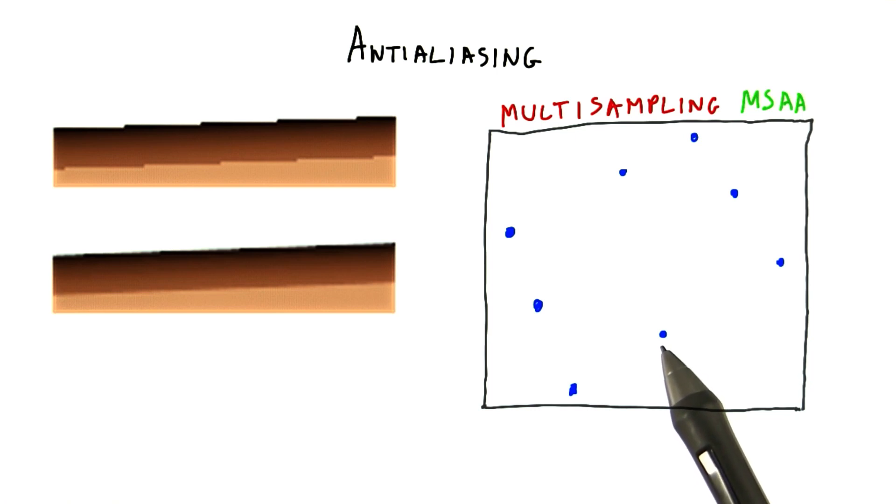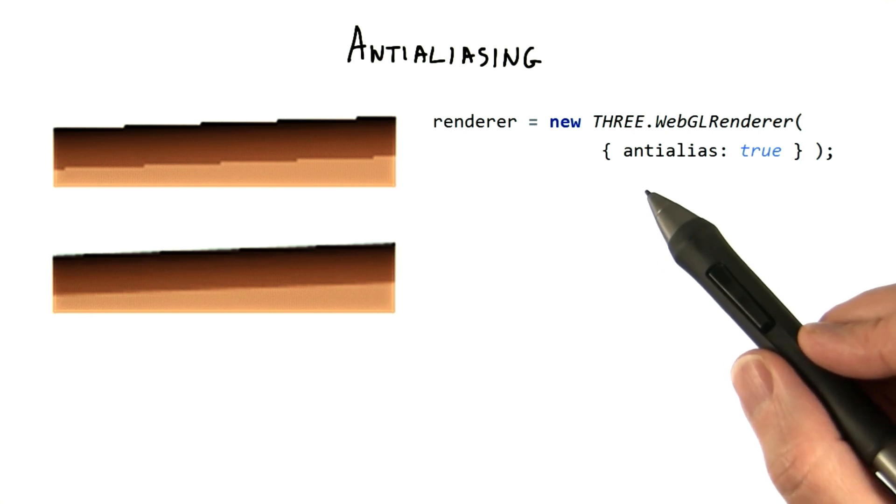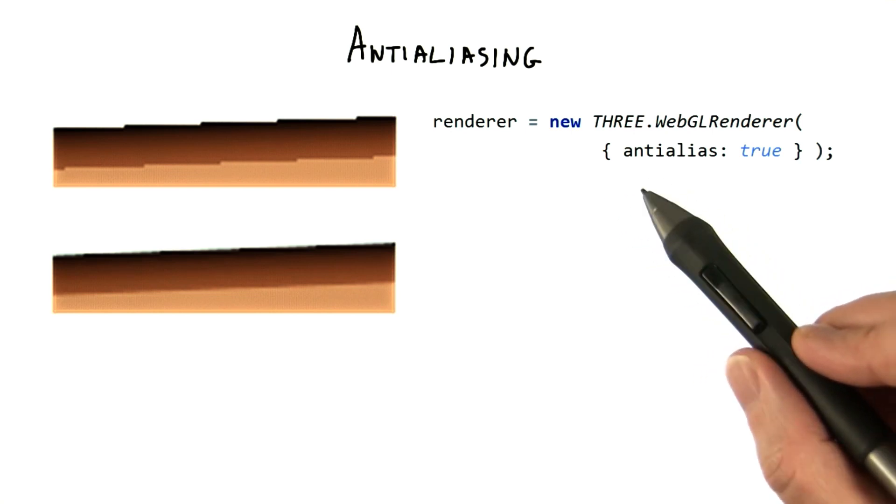I say generally because there's just a toggle for anti-aliasing, on or off, and it's not specified what form of anti-aliasing is used. To turn anti-aliasing on in 3.js consists of setting a single Boolean parameter called anti-alias.